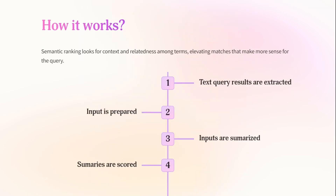How does it work? It takes the text query, extracts results, and processes them to get the top 50 results. The input query is then prepared by removing unnecessary terms and shortening it, which is converted into a summary. Those summaries are then scored, and according to that, the results are ranked.